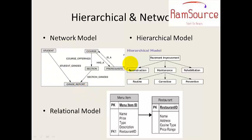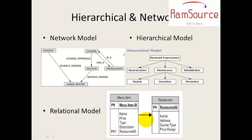The disadvantage of the hierarchical model led to the relational model. In the relational model, a restaurant table has attributes like name, price, type, and description. Another table has restaurant attributes — name, address, cuisine, and price range.